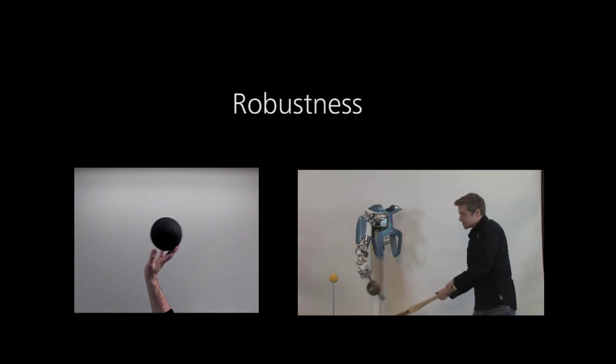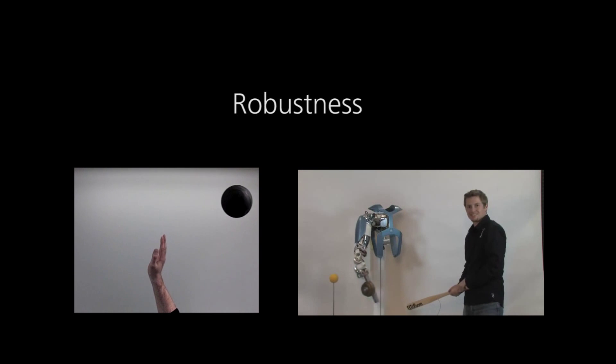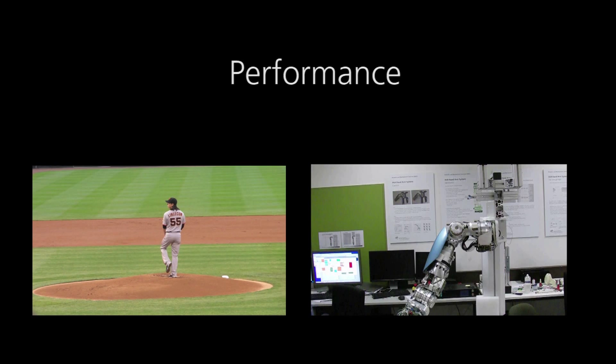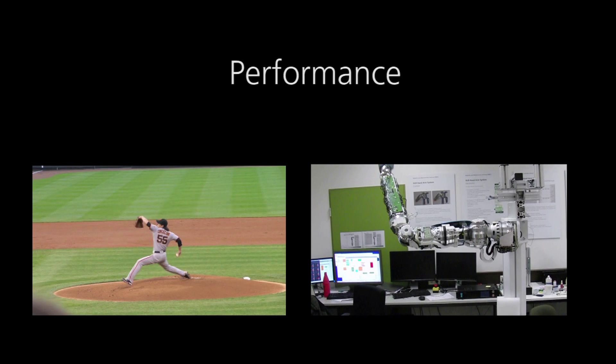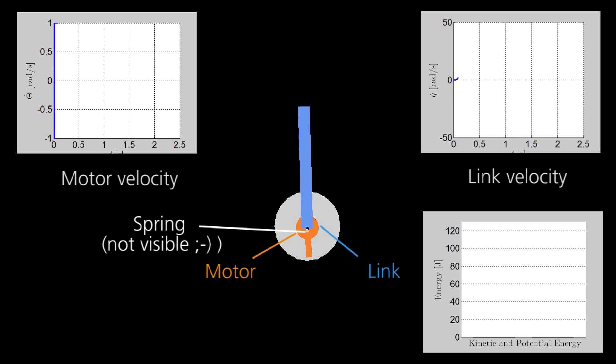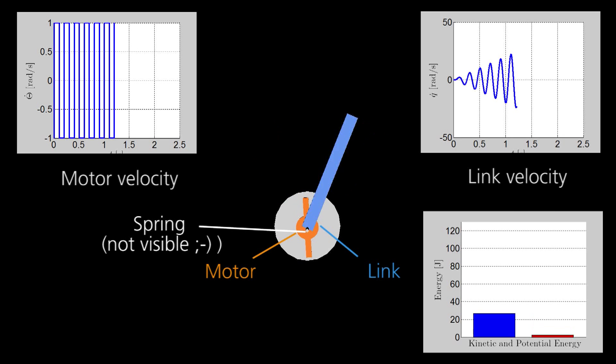Furthermore, the joint compliance protects the robot from getting damaged due to collisions. Controlling such intrinsically compliant robots by explicitly using the elastic elements in the joints allows for highly dynamic motions. This is achieved by temporary storage of potential energy and its transformation into kinetic energy.